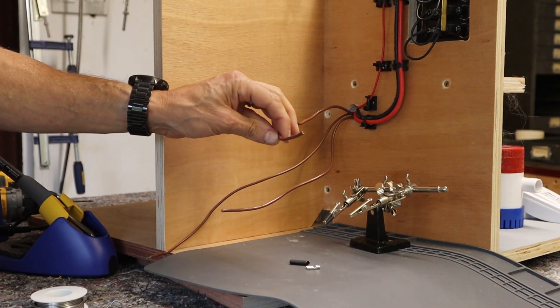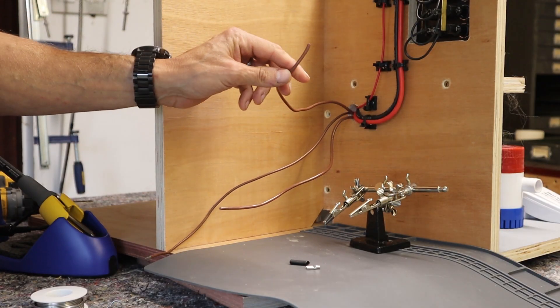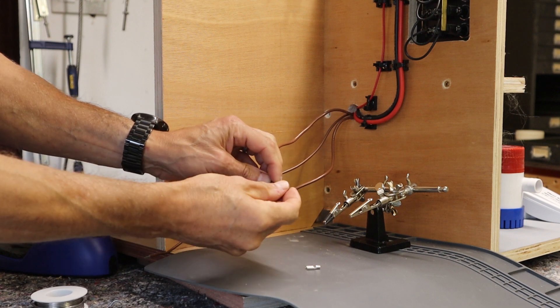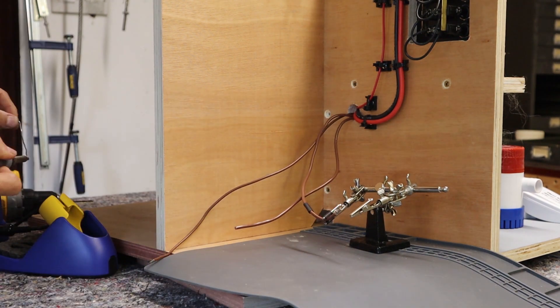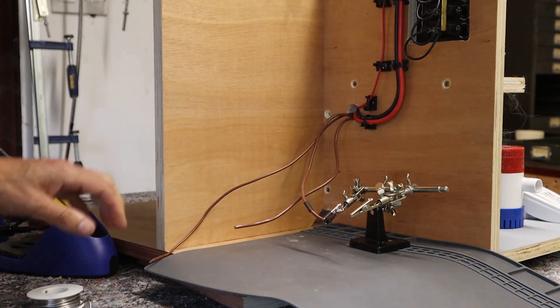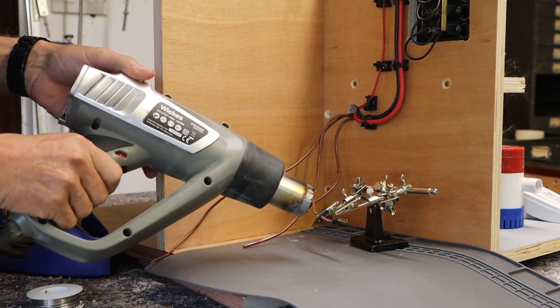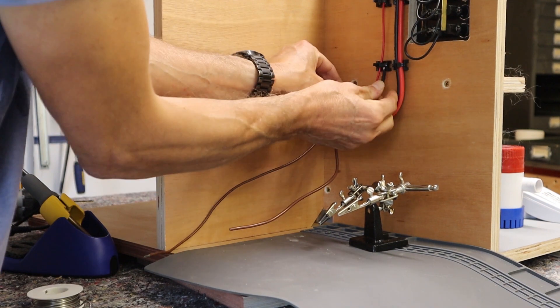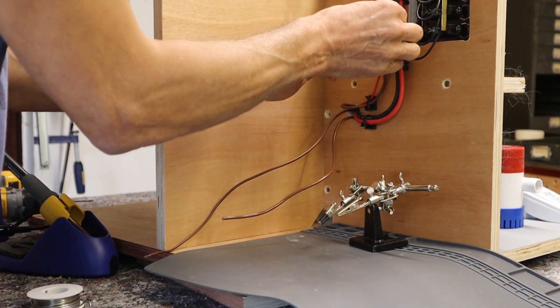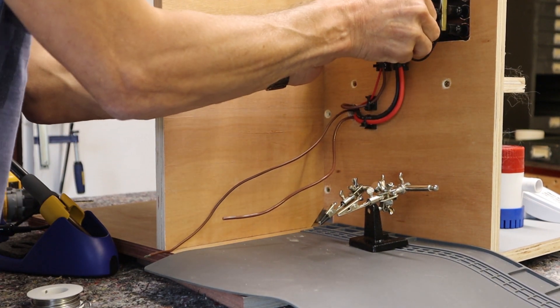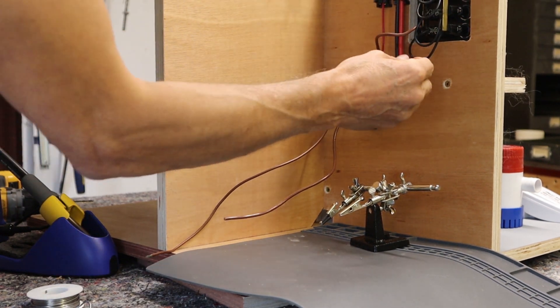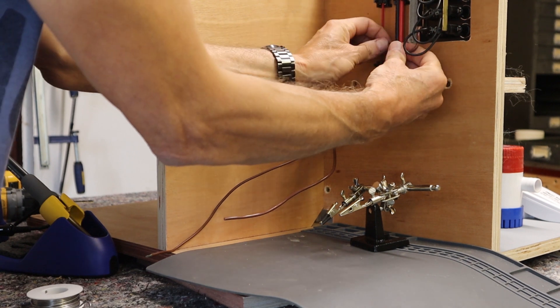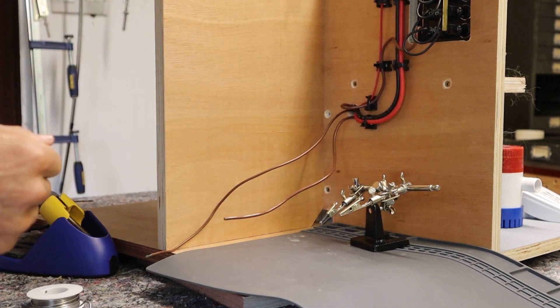Okay, so I've trimmed the wire to about the right length. So I'm going to pop the heat shrink on. And then you can go onto the spade terminal of the switch. So that is all on and sorted.